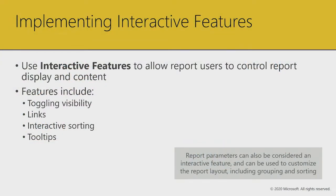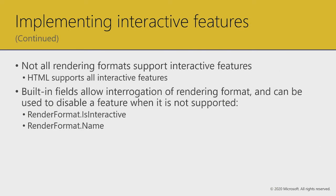You've arrived at module six. We're adding interactive features and polishing off our report designs. When it comes to interactive features, there are four things you might consider doing to your report: toggle visibility to achieve drill down and drill up behaviors; add links either to jump within the report or to other resources outside it; interactive sorting; and tool tips, minor but sometimes very important to convey additional information to your report users.